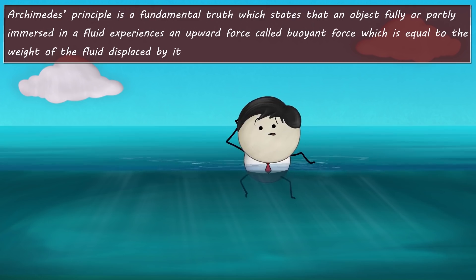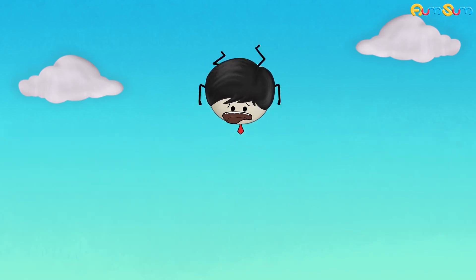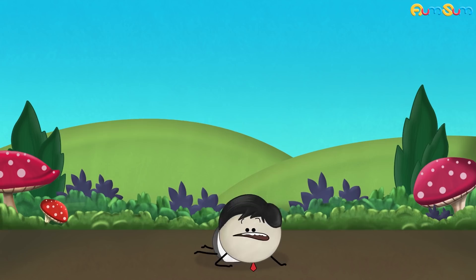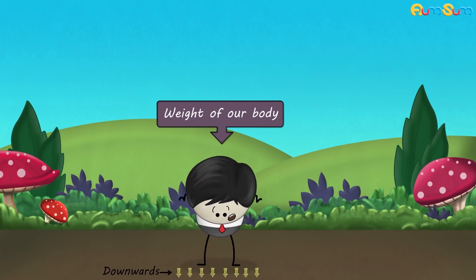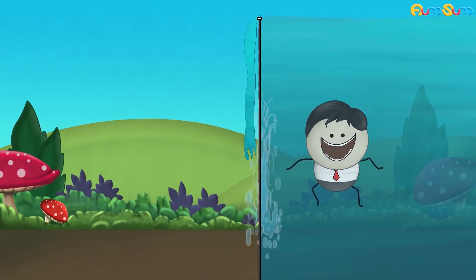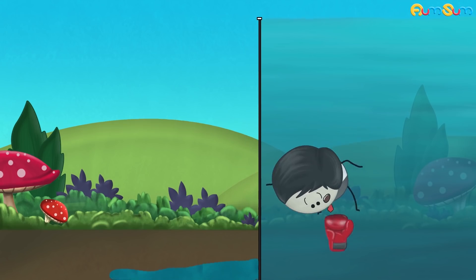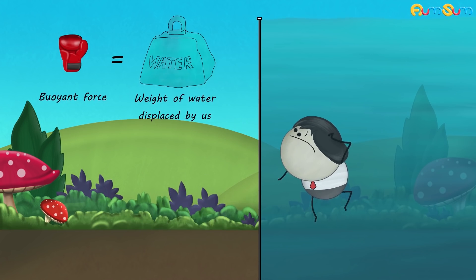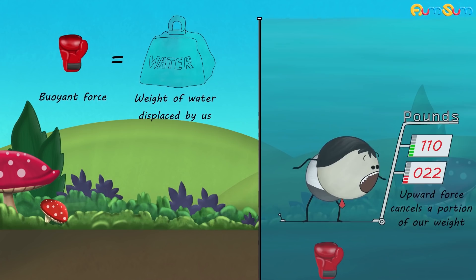Let me explain. Gravity always pulls us downwards. Hence, the weight of our body always acts downwards, whether we are on ground or in water. However, according to Archimedes principle, when we are in water, we experience an upward force — that is, buoyant force — which is equal to the weight of water displaced by us. This upward force cancels a portion of our weight, causing us to weigh less in water.